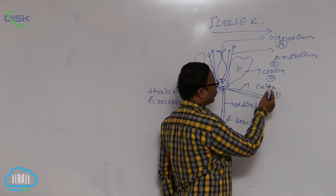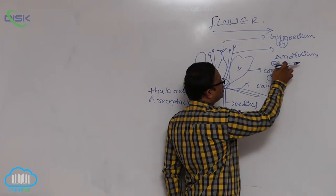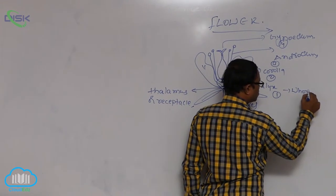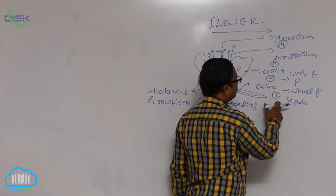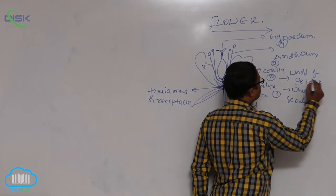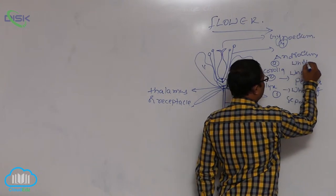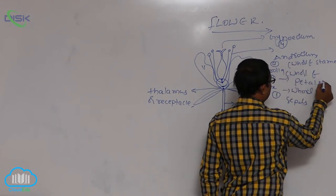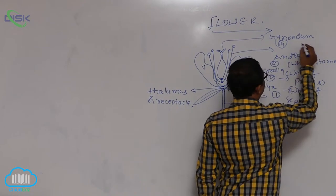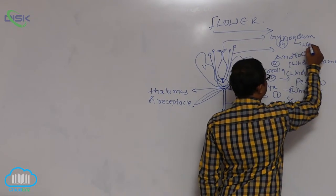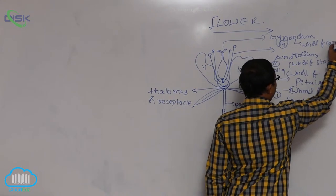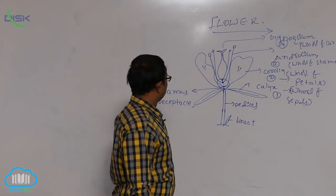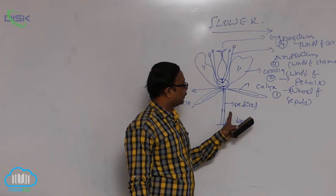Calyx and corolla are accessory organs, while androecium and gynoecium are reproductive organs. Calyx means a whorl of sepals, corolla means a whorl of petals, androecium means a whorl of stamens, and gynoecium means a whorl of carpels or pistils. These are the four types of whorls.